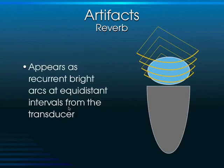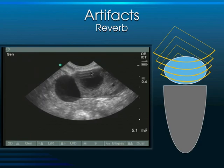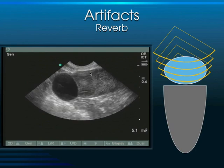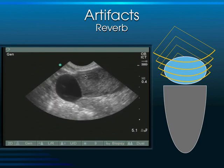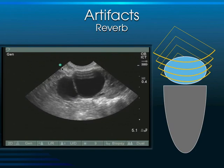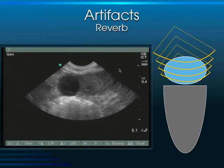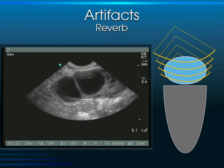Another artifact is reverberation, where equidistant arcs appear coming down from the top of the probe. This is a natural artifact seen with all transducers. You can identify it as artifact because these arcs typically cross the wall of the organ into the adjacent space.